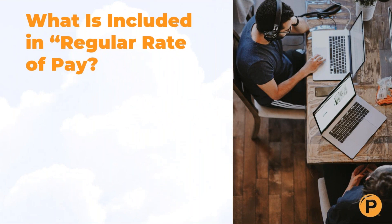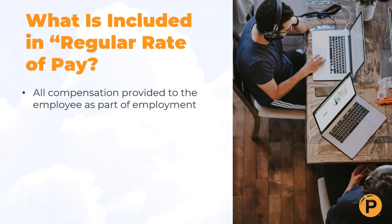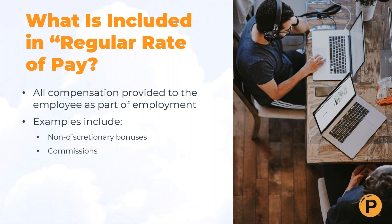So what's included in the regular rate of pay? It's all compensation provided to the employee as part of employment. This includes non-discretionary bonuses like attendance bonuses and promised performance bonuses, commissions, incentive pay, perfect attendance awards, and shift differentials. The key point is that non-discretionary bonuses — things like perfect attendance awards — must be counted in when you pay them out during that work week.